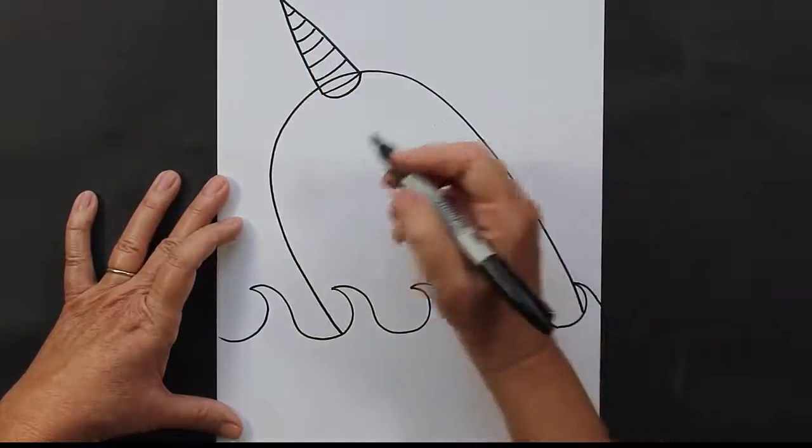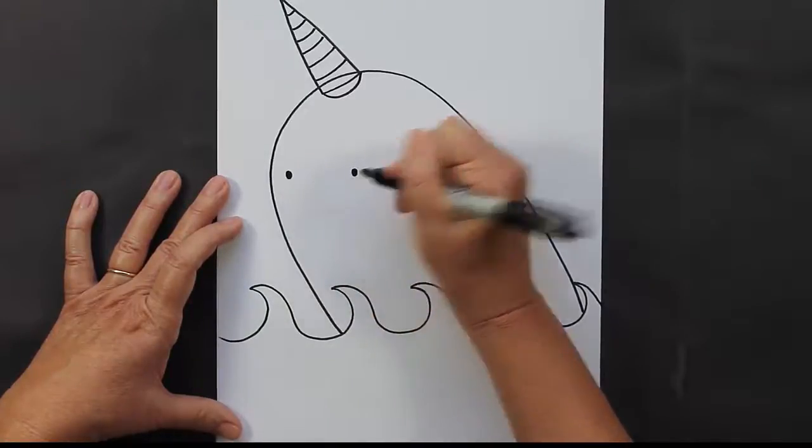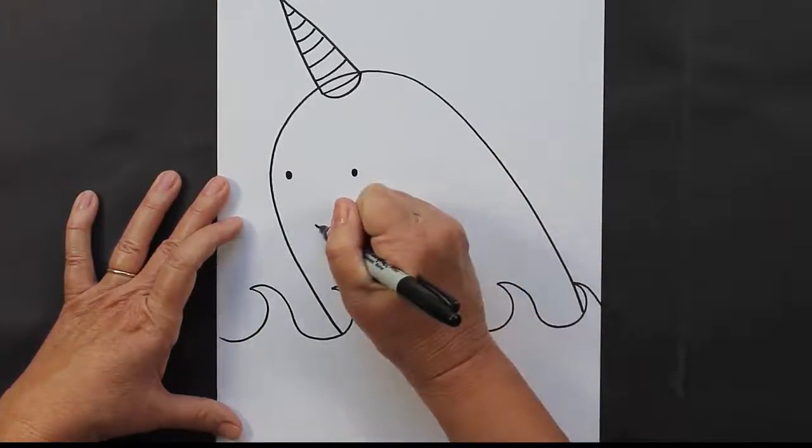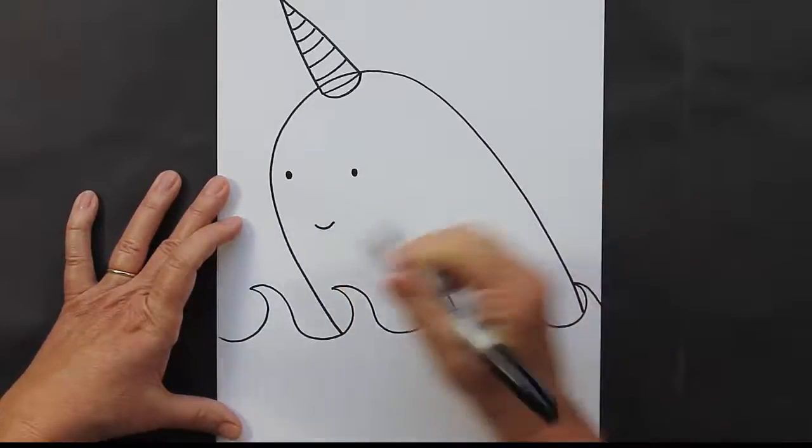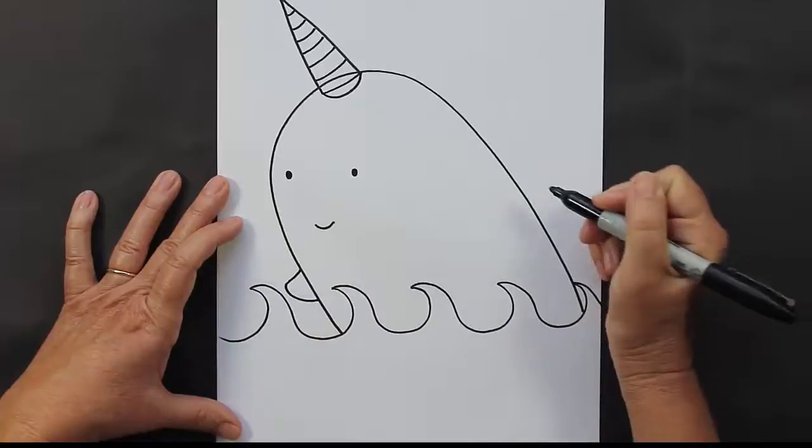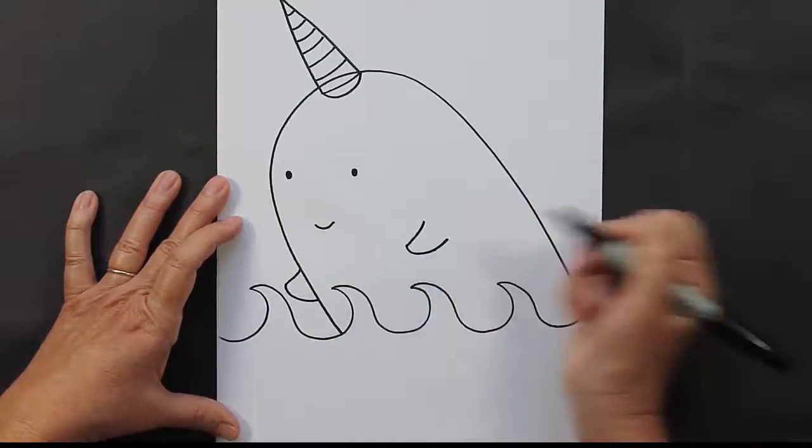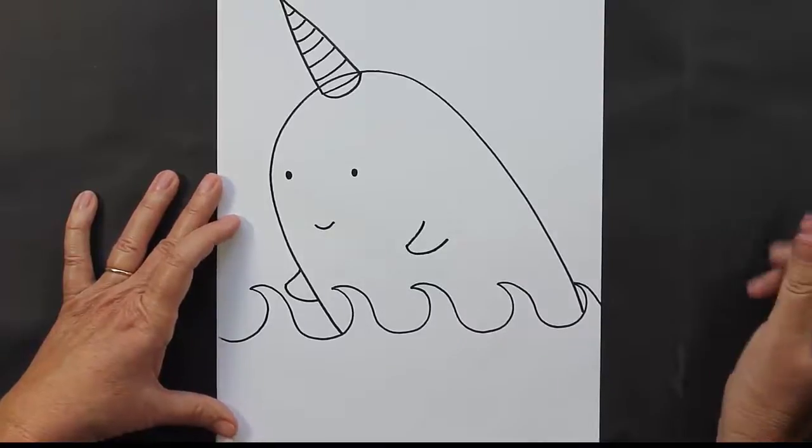All right, let's go back down and we're going to make some small eyes and a little smile. And some little fins. Oh, he is so cute. All right, there you go. There's your narwhal.